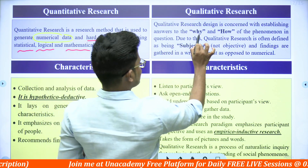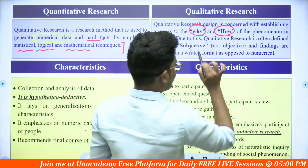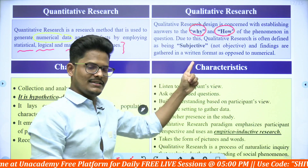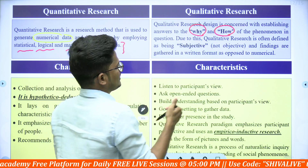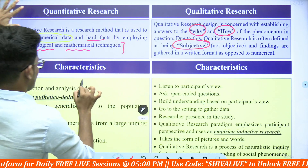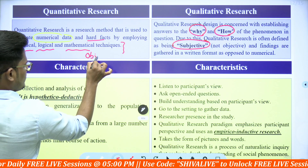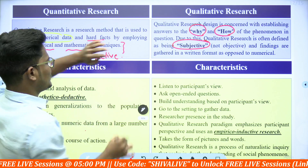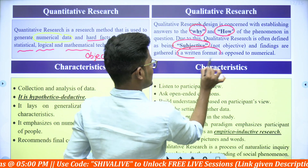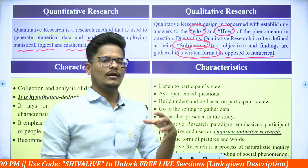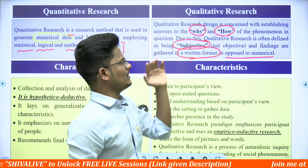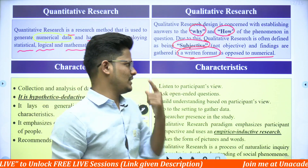Whereas qualitative research concentrates on why and how — reasons are important in qualitative, while data figures are important in quantitative. Qualitative is defined as subjective in nature, whereas quantitative is more objective in nature. Qualitative findings are gathered in a written format as opposed to the numerical form of quantitative. Here findings are in numerical form, whereas in qualitative they are in a written, descriptive format.